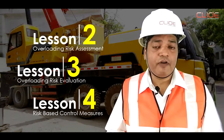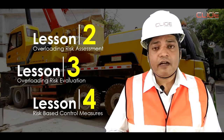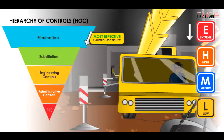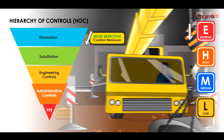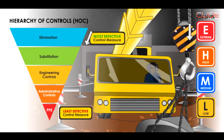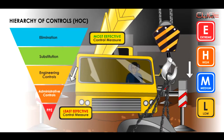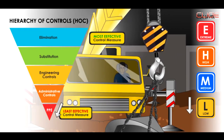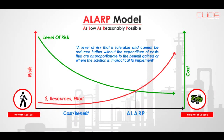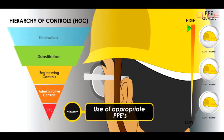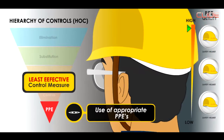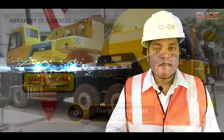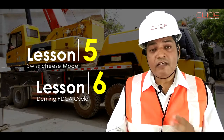In lessons 2, 3, and 4, I will cover how to assess the risk of Overloading Hazard and how to use the risk reduction control measures as per the hierarchy of control, from most effective to the least effective, along with the ALAP model, which talks about the cost of implementing each control measure.